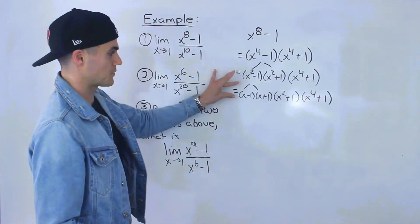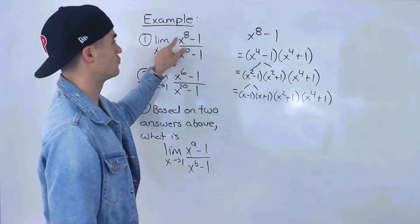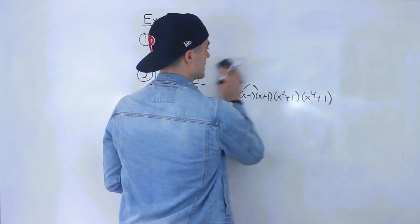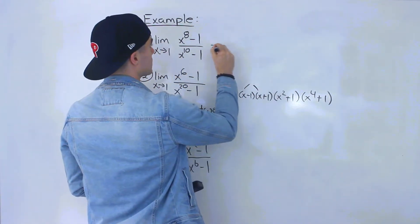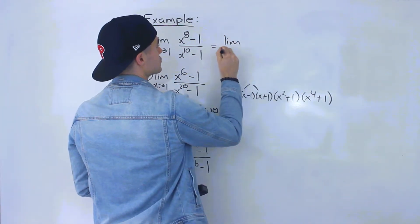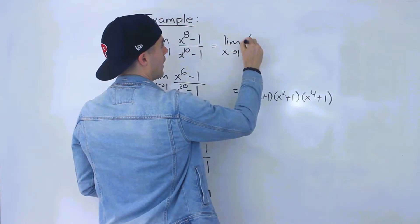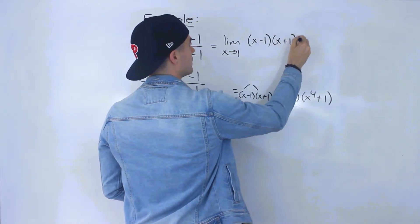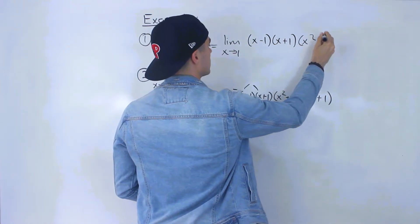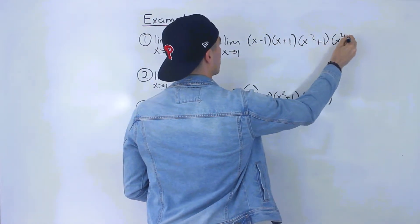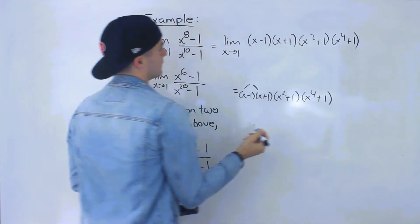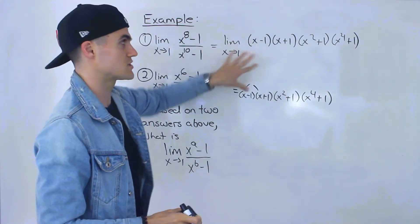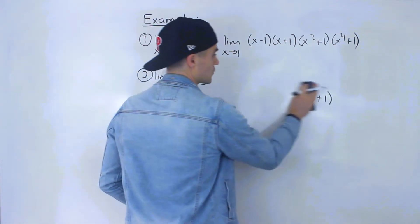So now we've isolated that x minus 1 factor for the numerator. I'm going to rewrite the limit as x approaches 1 of x minus 1, times x plus 1, times x squared plus 1, times x to the power of 4 plus 1. That's what x to the power of 8 minus 1 factors into, purely using difference of squares.